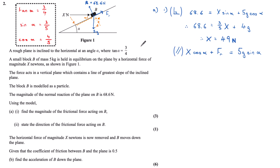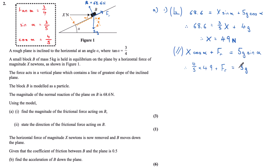I'm now going to look parallel to the plane. Because the particle is in equilibrium, all forces acting up the plane equal all forces acting down the plane. Acting up the plane I have the component of X, which is X cos alpha, plus friction, which I've labelled acting up the plane. These equal the only force acting down the plane: the component of weight, which is 5g sin alpha. Using my Pythagorean triple values for cos alpha and sin alpha, and knowing X = 49 newtons, I write: 4 fifths times 49 plus friction equals 3 fifths times 5g, which is 3g.